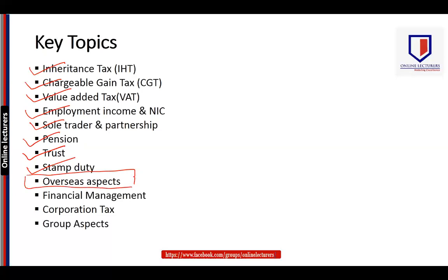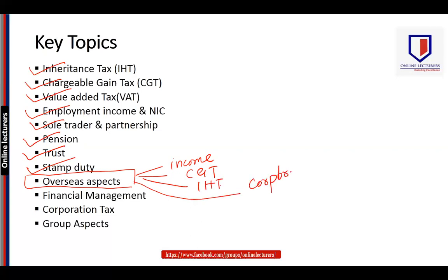Very important for the ATX exam are the overseas aspects. The overseas aspects are connected with your income tax portion, your CGT portion, and your IHT portion. It also relates to corporation tax, meaning this part is an additional and very important element because multiple areas are connected. The examiner might ask you about residence status and domicile status, as you can see in past papers. A new area — financial management of business — including personal financial management as well as business financial management is included. Corporation tax is very extensive: we cover the normal TX part of corporation tax plus issues related to controlled companies, family companies, foreign companies, and so on.